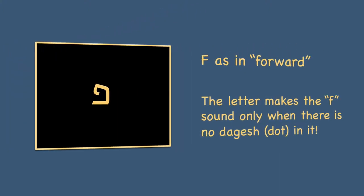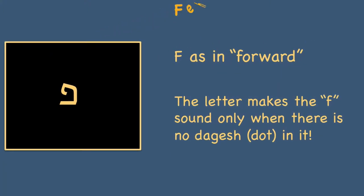We have the same letter but without the dagesh in it, and then it's called Fe, because it makes an F sound as in 'forward.' This letter will only make the F sound when there is no dagesh or dot in it. So we have Pe and Fe, just as we had Bet and Vet, or Kuf and Chaf.